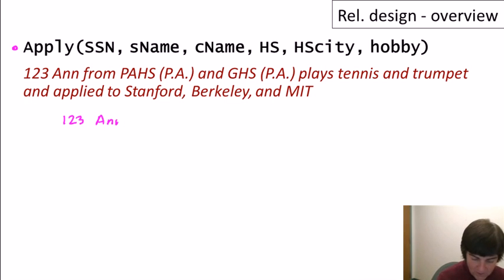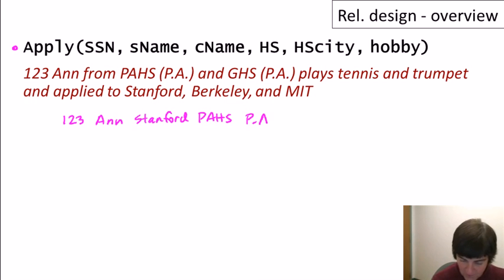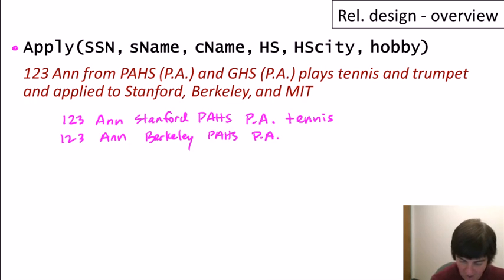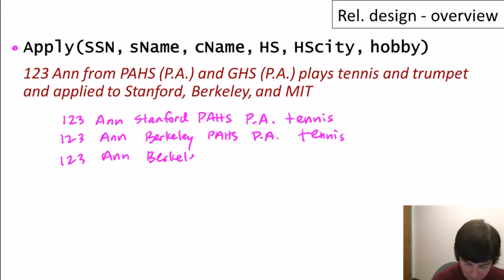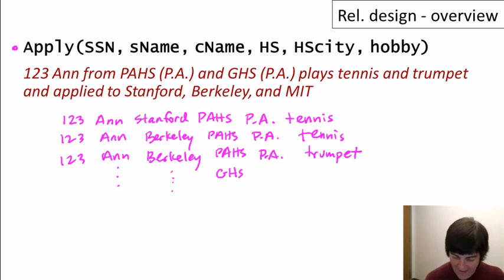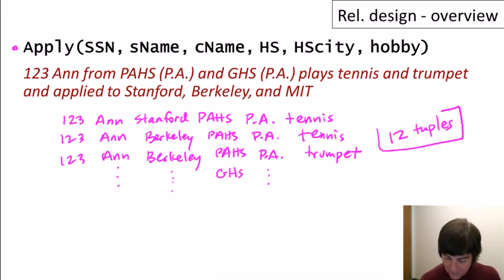Suppose we have a student Ann with social security number 123. She went to two different high schools in Palo Alto, plays tennis and the trumpet, and is applying to Stanford, Berkeley, and MIT. We'd have a tuple: 123, Ann, Stanford, Palo Alto High School, Palo Alto, tennis. Another: 123, Ann, Berkeley, Palo Alto High School, Palo Alto, tennis. Another for Berkeley with trumpet, and more tuples for her other high school, Gunn High School also in Palo Alto. We will need a total of 12 tuples to represent this information about Ann.